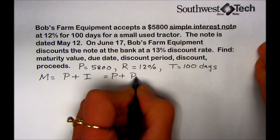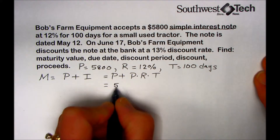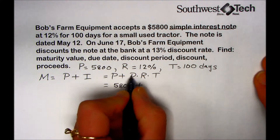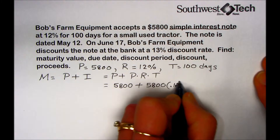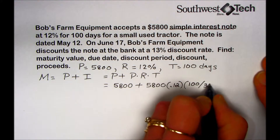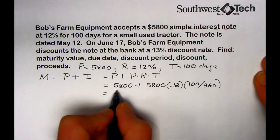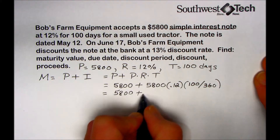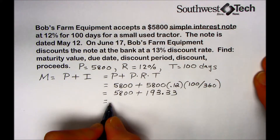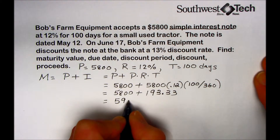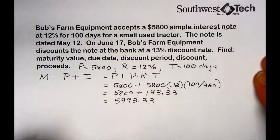Interest is found by taking principal times rate times time. Replacing those variables with the values, we have $5,800 plus $5,800 times 0.12 times 100 over 360. Simplifying the multiplication gives us $193.33, which is the interest for the use of this money. So the maturity value at the end of 100 days — what the holder of the note should receive — is the principal plus the interest charge.